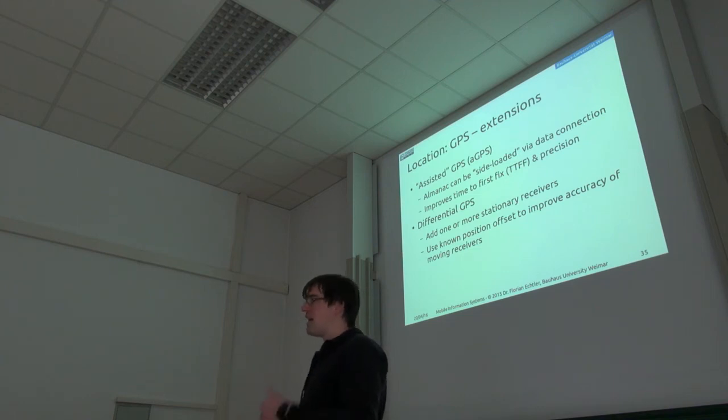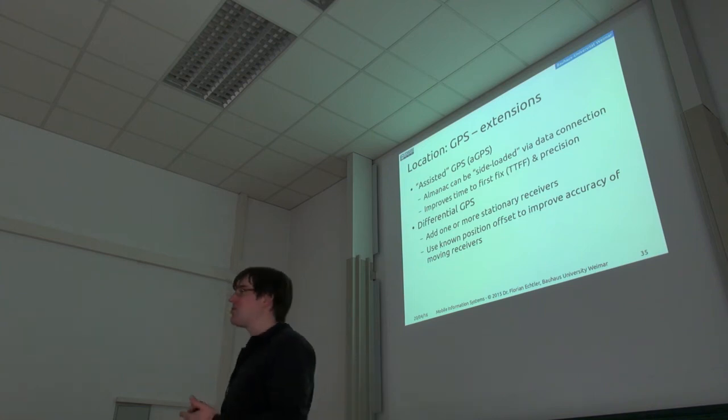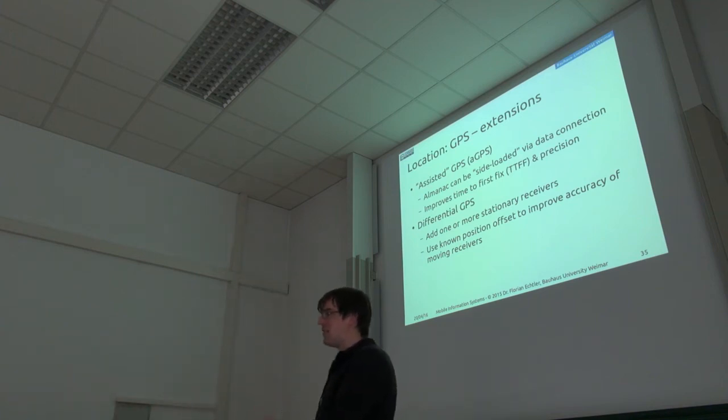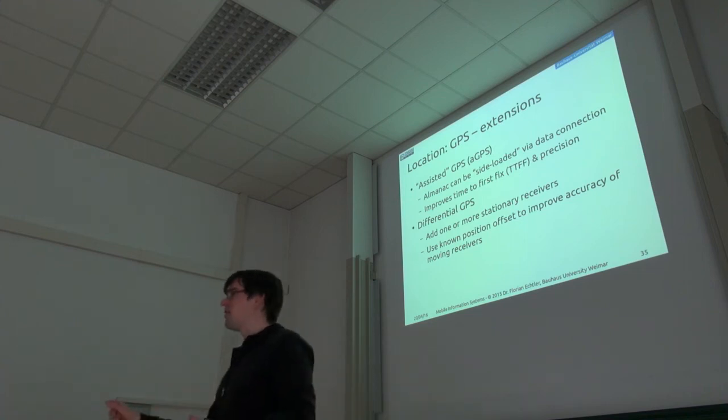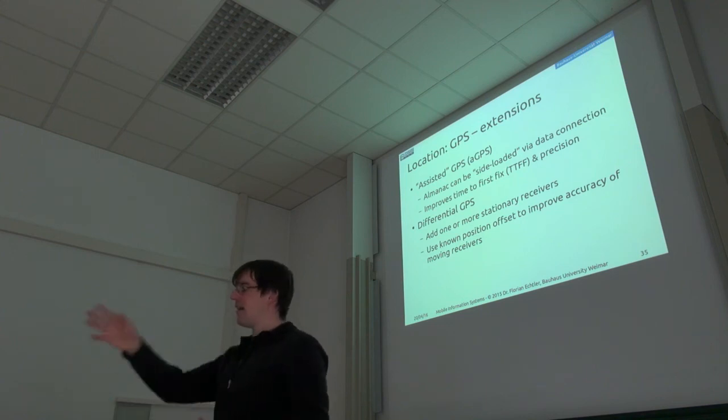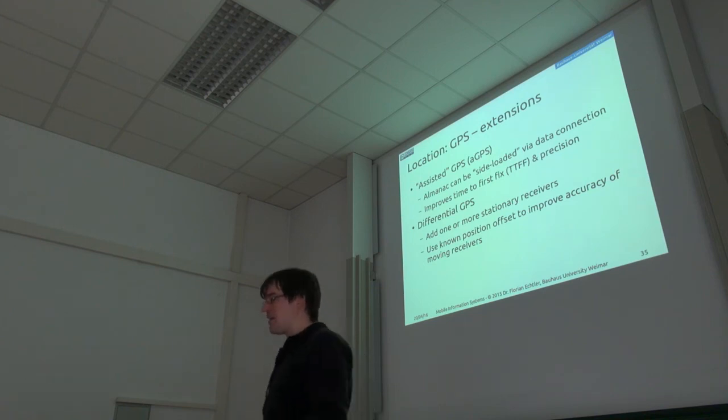So for example, if you have bad weather and that bad weather causes reception errors, then the stationary receiver will get the same errors, but you will know exactly where the stationary one is. And then you can use that to calculate a correction factor and add that to your moving receiver and get higher accuracy.